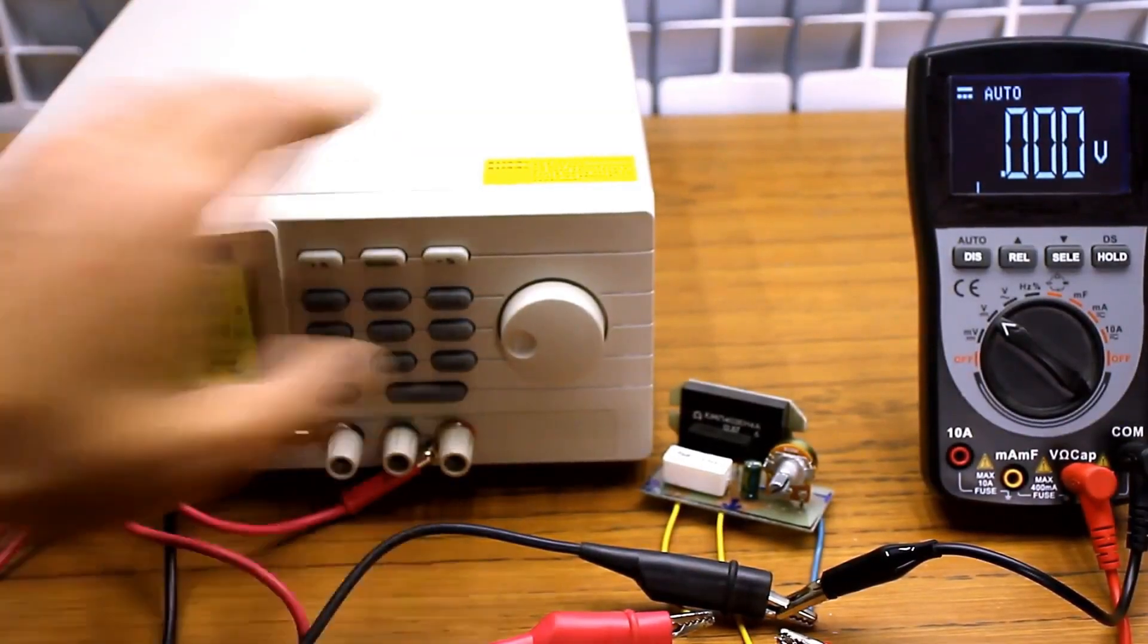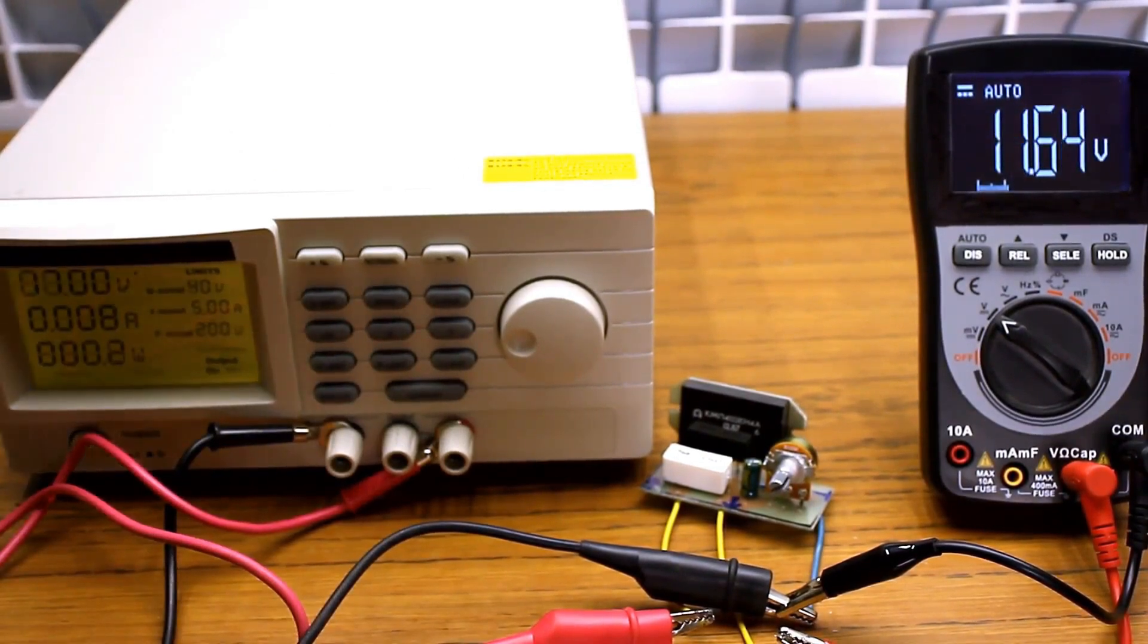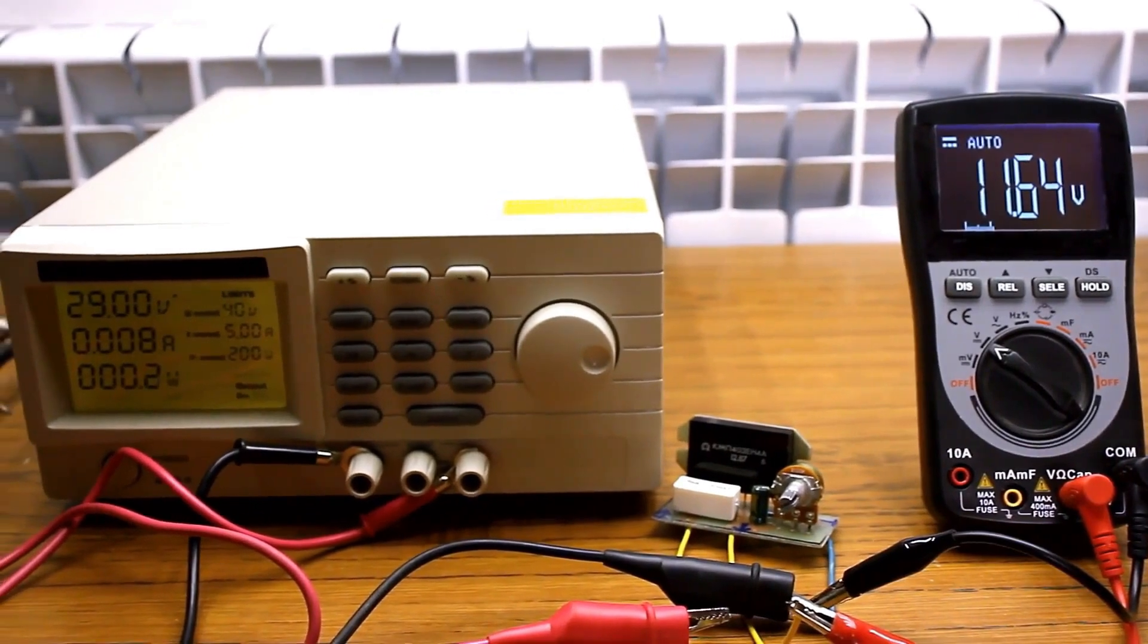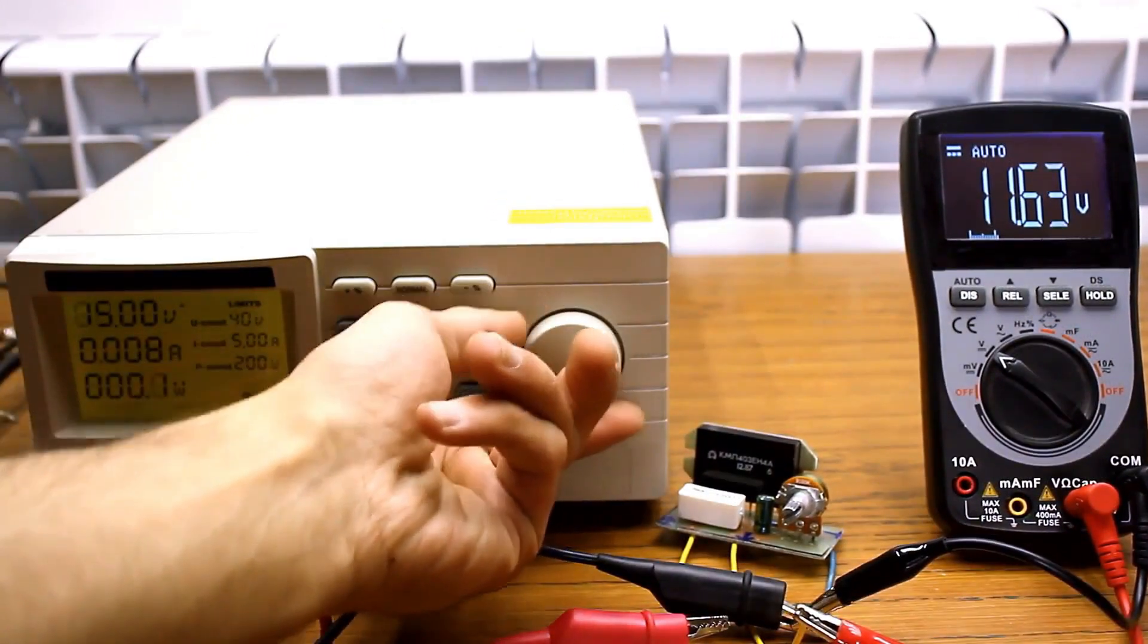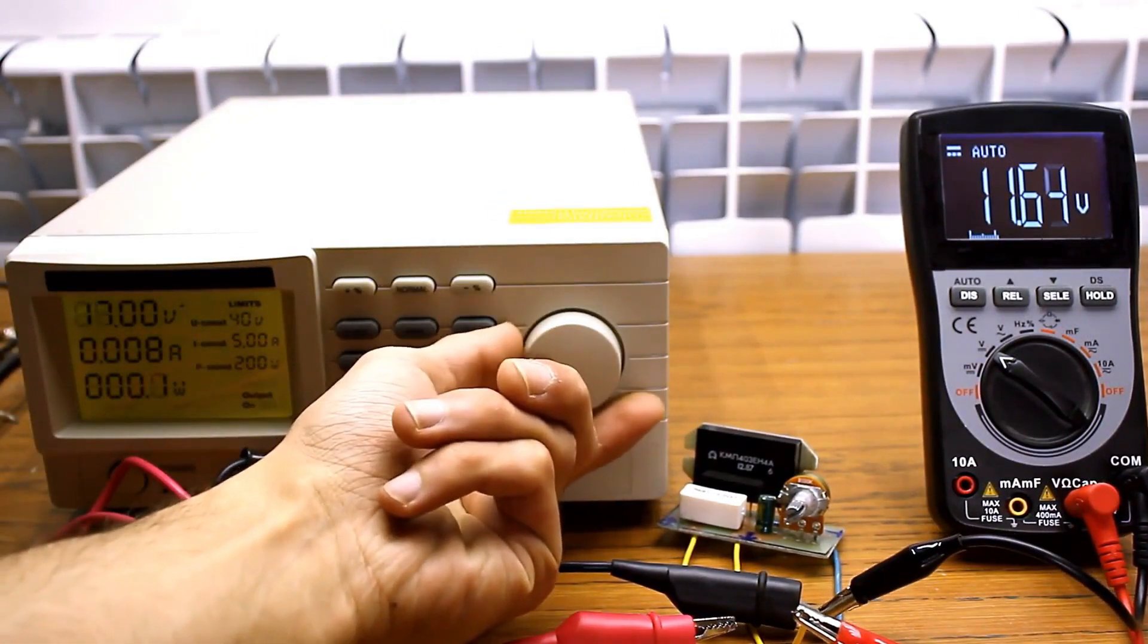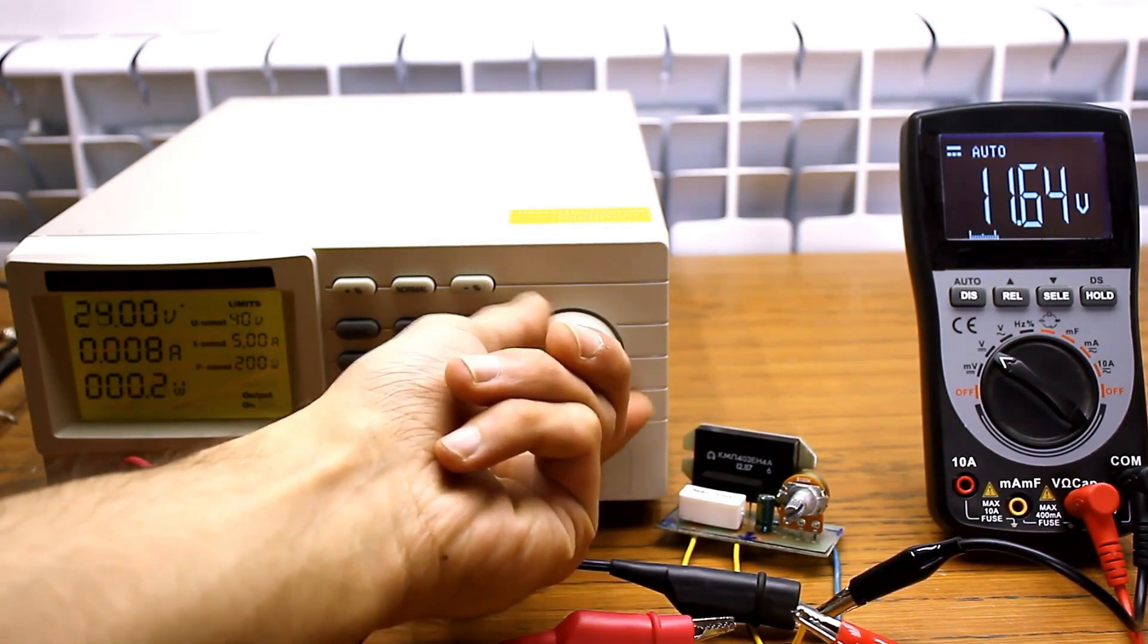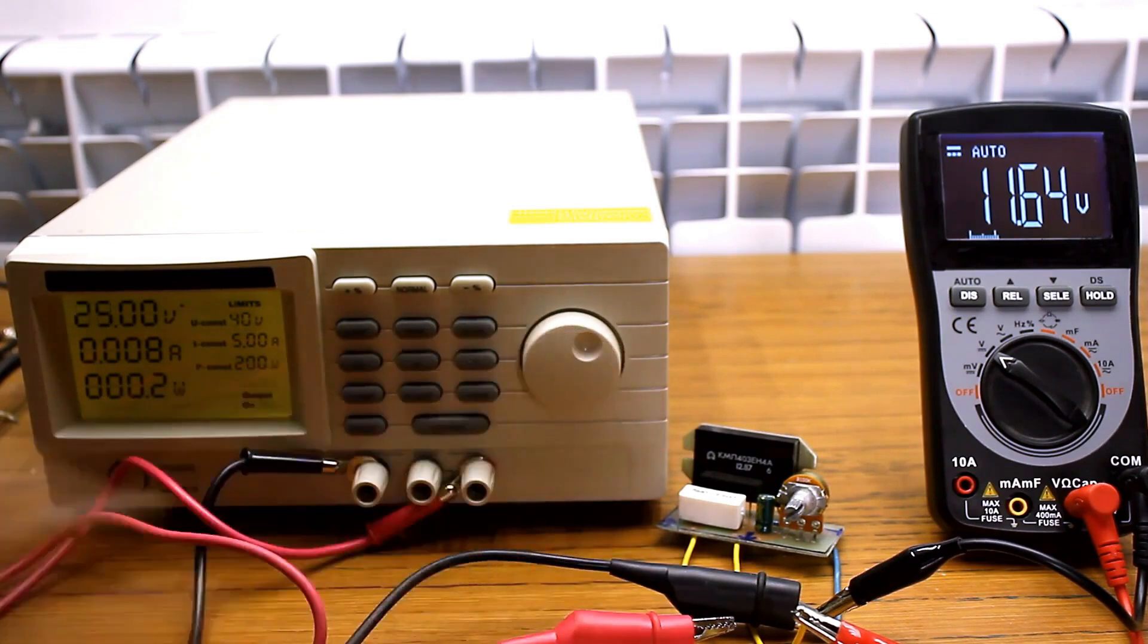Let's move on to testing. First, we'll check the stability of the output voltage. Power is supplied from the laboratory power supply. When the input voltage changes in the range from about 14 to 29 volts, the output remains very stable at the level of 12 volts. Excellent. Let's continue.